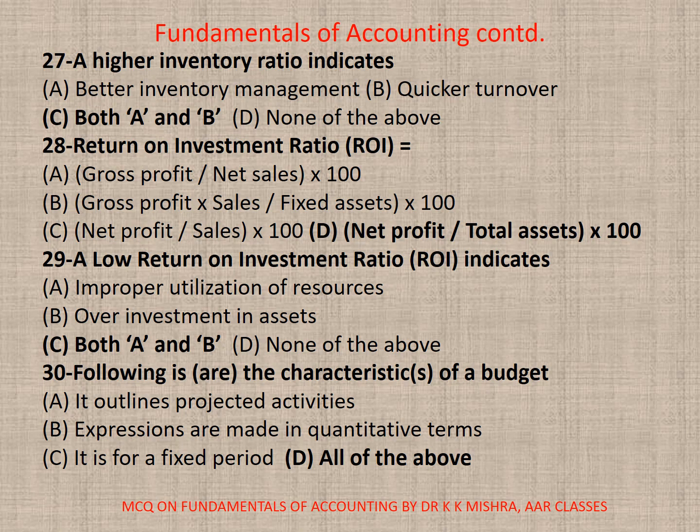Question 30: The following are the characteristic or characteristics of a budget — A. It outlines projected activities, B. Expressions are made in quantitative terms, C. It is for a fixed period, D. All of the above. Correct option is D. All of the above.